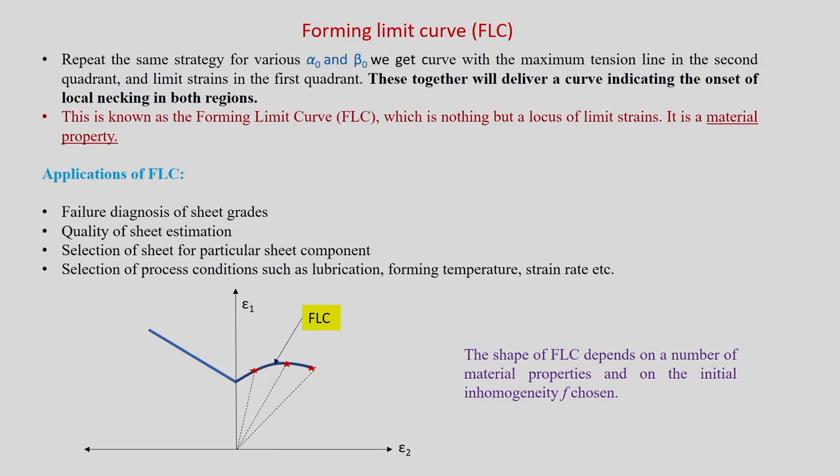In the previous section, we introduced the concept of forming limit curve and what happens during the necking process, specifically in the biaxial stretching region in the first quadrant. We will introduce that again and then see what are the different formability tests available to estimate the formability, forming limit, deep drawability, or stretchability of sheet materials.